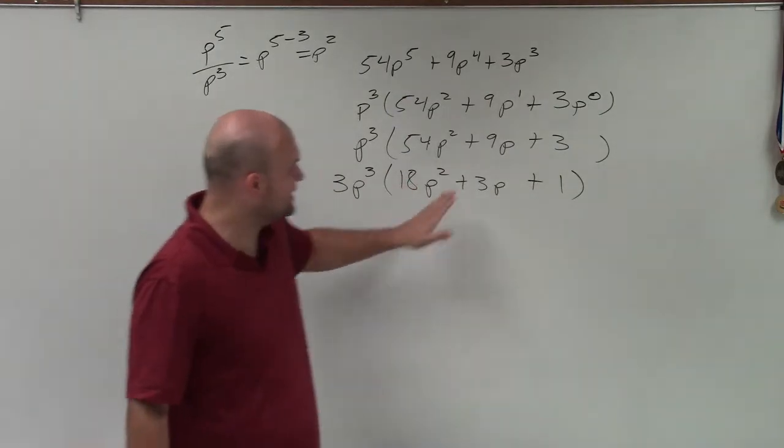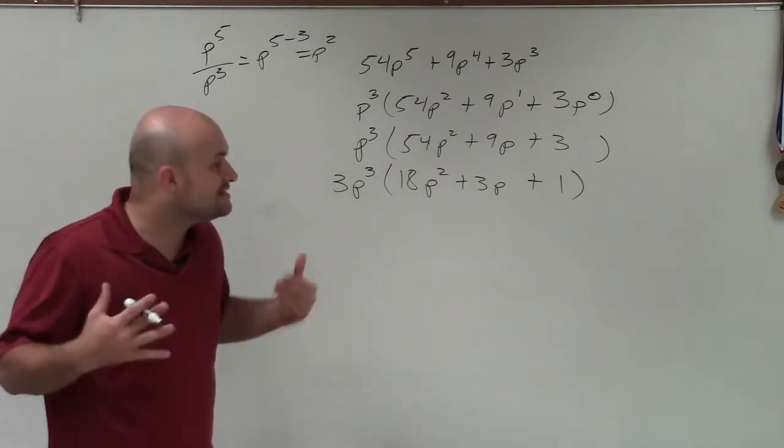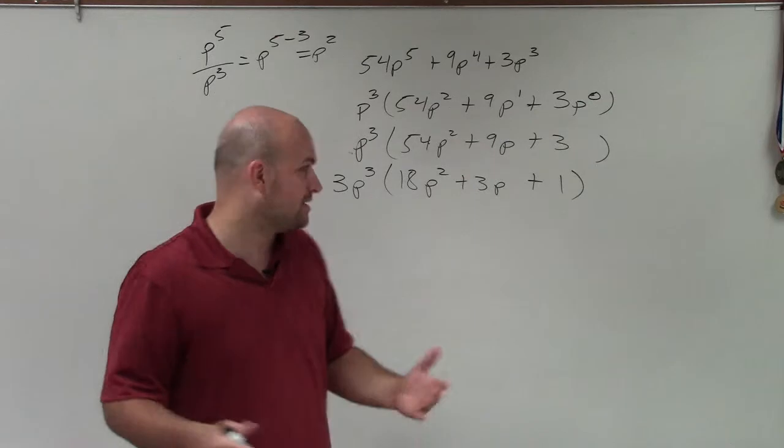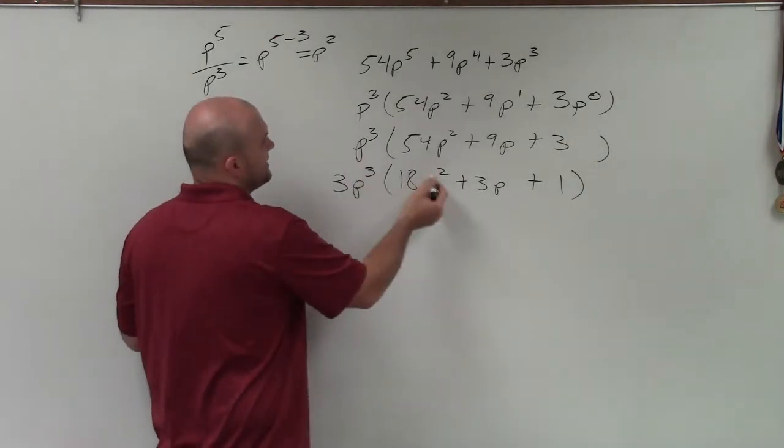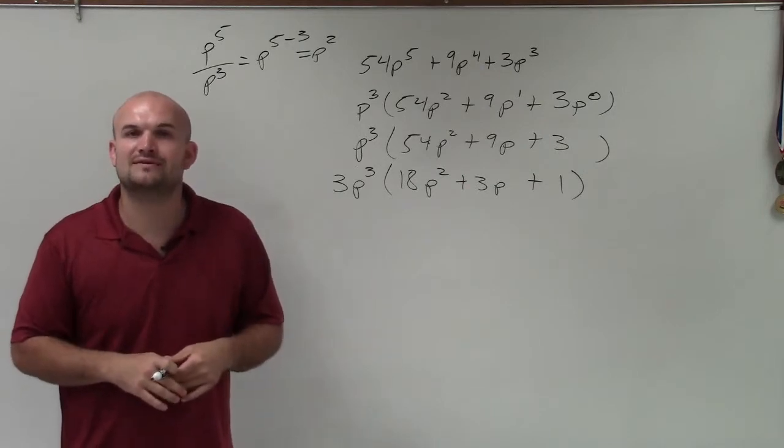Again, now let's look at it. Do each and now, do any of these terms share any common factors? And since no, they do not, I know that 3p cubed was my greatest common factor. And I can always go back, and again, by applying distributed property to make sure that I factor that out correctly. Thanks.